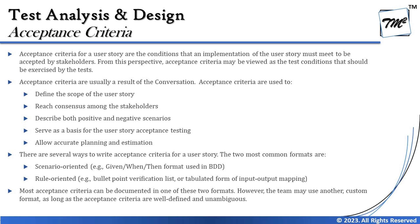Most acceptance criteria can be documented in one of these two formats. However, the team may use another custom format, as long as the acceptance criteria are well-defined and unambiguous. The point being made is that it's not that every single organization or team has to stick to just these two formats. If they think there is any other way that makes their team understand better, then they can always go ahead and write it. There are no restrictions on how you should write your acceptance criteria.